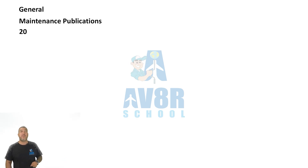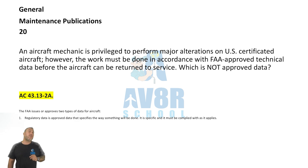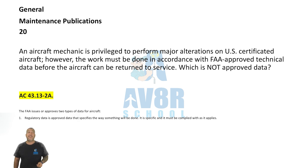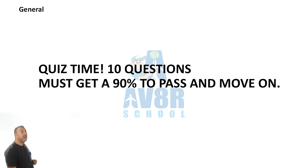Number 20. An aircraft is privileged to perform major alterations in the U.S. on certificated aircraft; however, the work must be done in accordance with FAA-approved technical data before the aircraft can be returned to service. Which of the following is not approved data? The answer is AC 4313-2A. Okay guys, take another quiz and I'll see you soon.